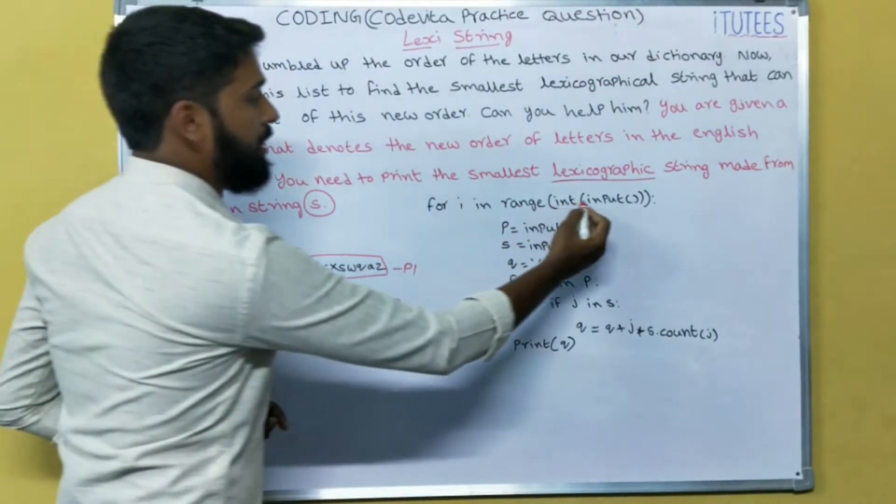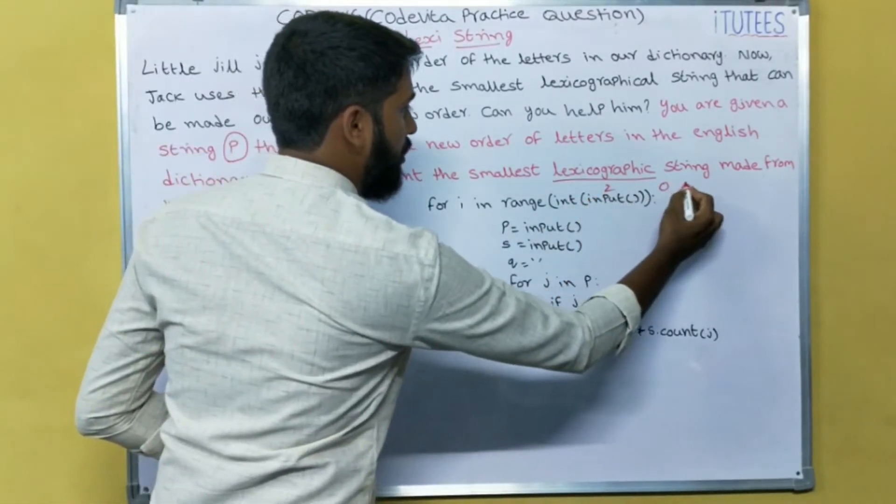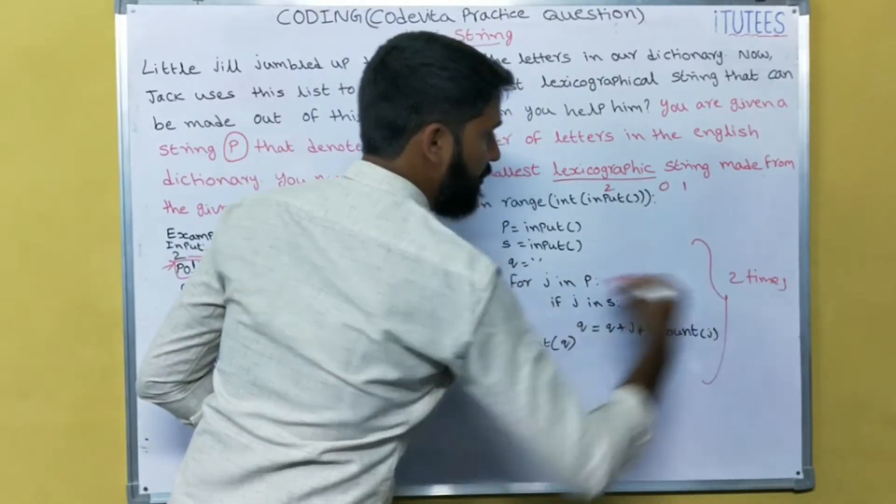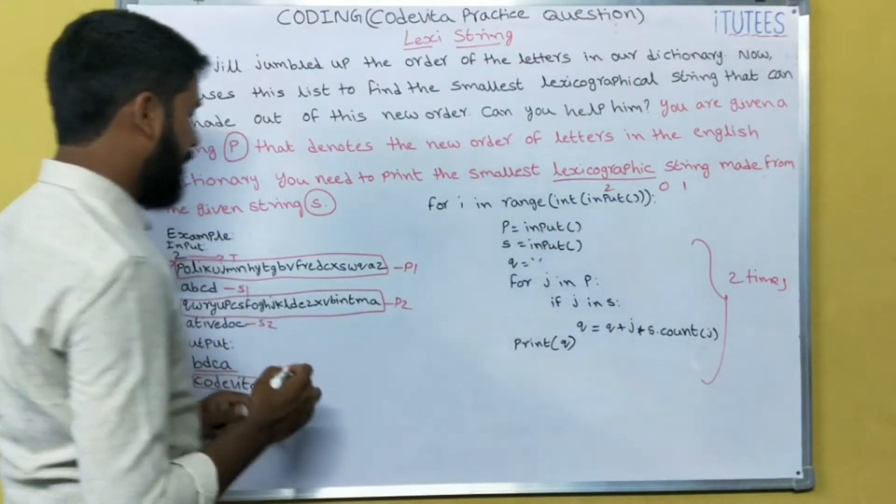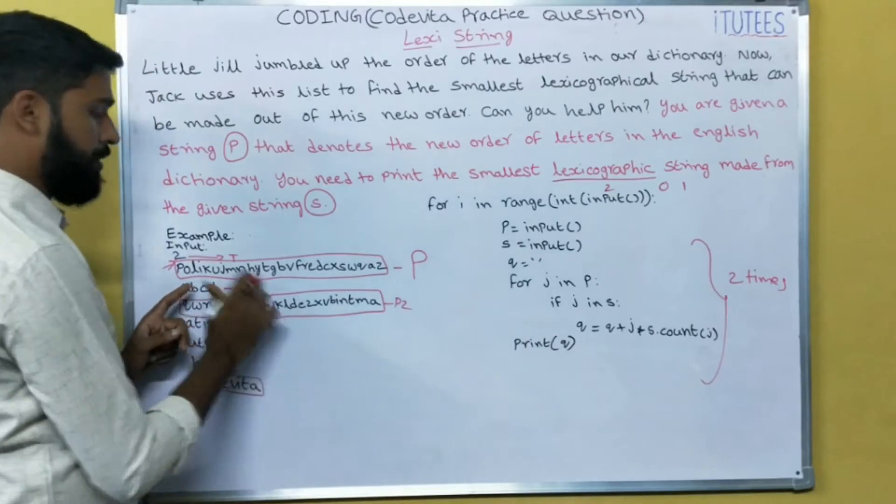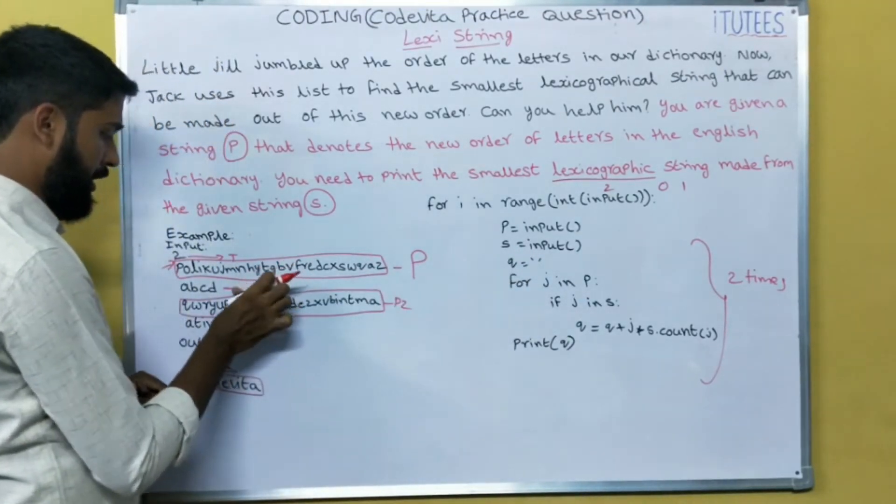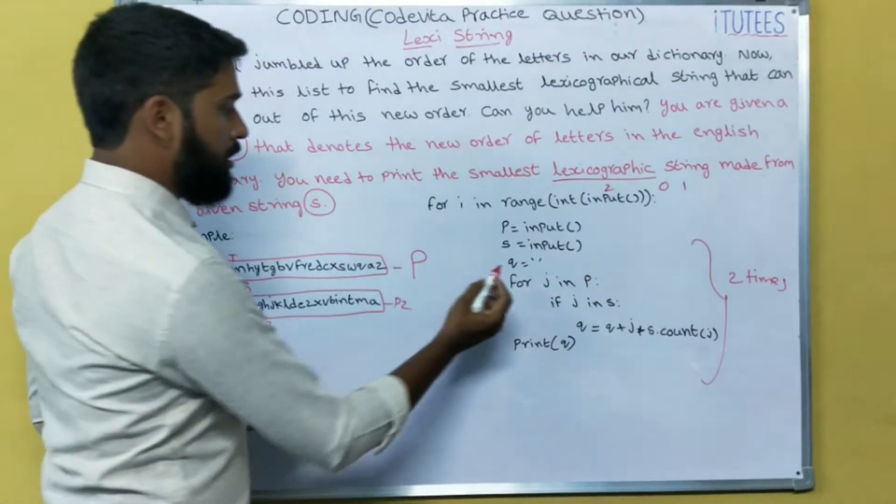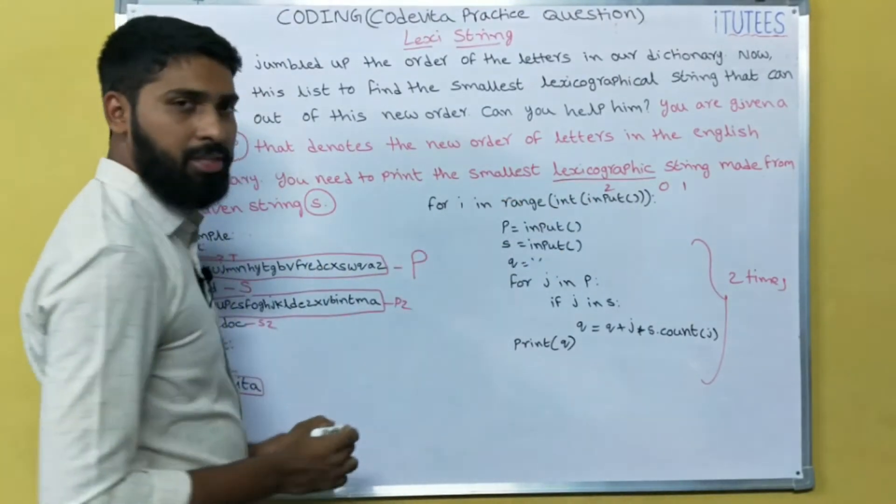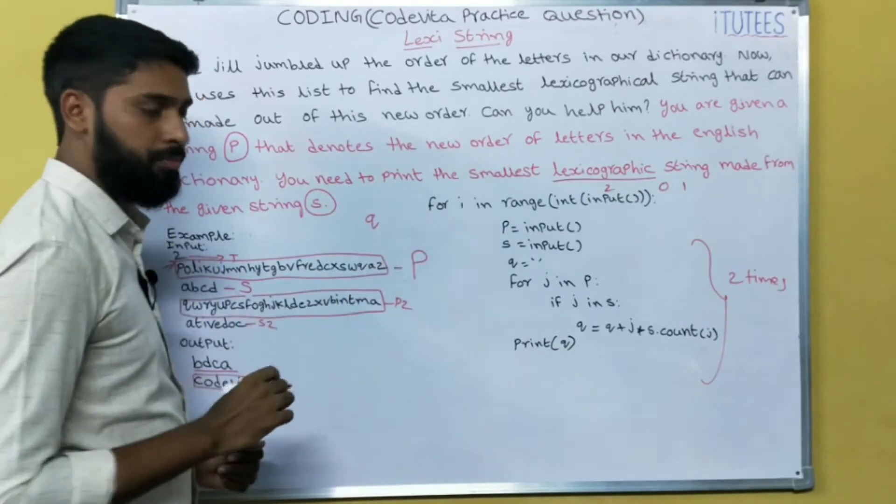For I in range of input, that means this is the test case. So here the input is 2, that means we are going to execute this block two times. P equals to input, this is the P. S equals to input, that means this is the S. I am taking Q to store the lexicographic string. By default it is empty string.